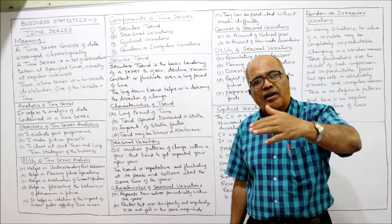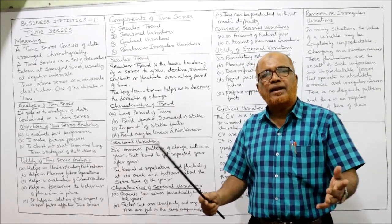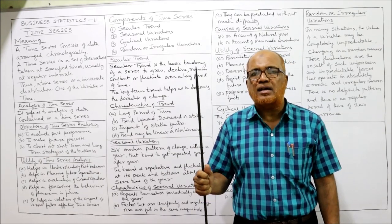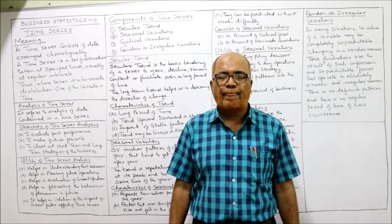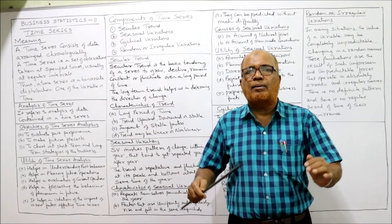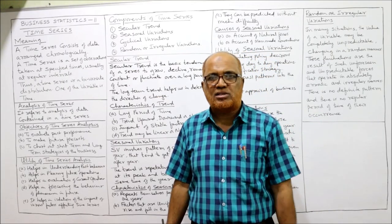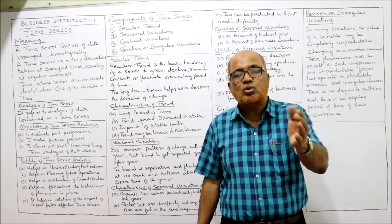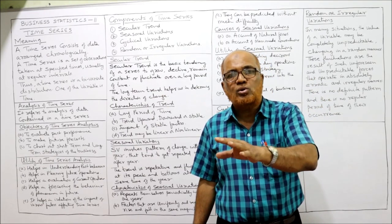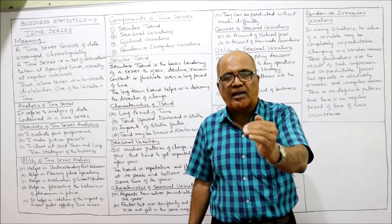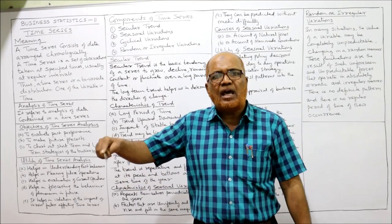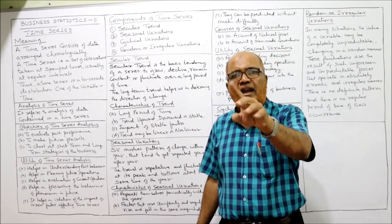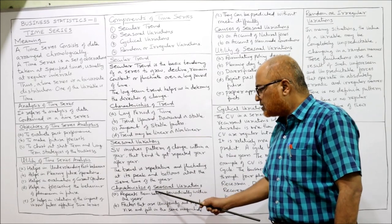A simple example: in the case of sale of umbrellas, the sale of umbrellas and raincoats will be more during the monsoon season. In India, monsoon comes normally in the months of June, July, and August — so during those months the sale of umbrellas will increase. As soon as September and October come, the monsoon is over, and slowly the demand for umbrellas and raincoats will come down. This pattern will be there every year — it is repetitive. Changes occurring within one year and repetitive is called seasonal variation.